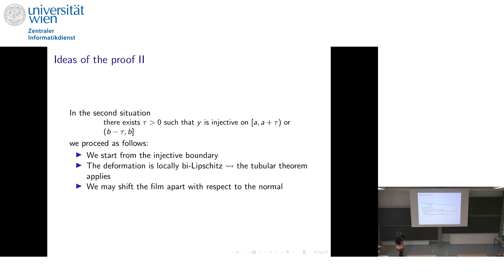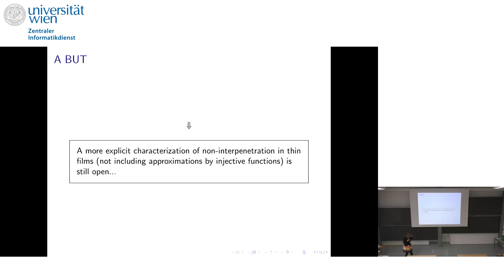Maybe the closure of injective functions is the correct way — at least for the film it seems very natural, and maybe even in the bulk it would give the right result as Pantz shows by his examples. But it's not explicit: if somebody gives me a deformation, I have a very hard time deciding if it's admissible or not. This is a very big open problem — how can I do numerics if I have problems deciding whether a function is even admissible?